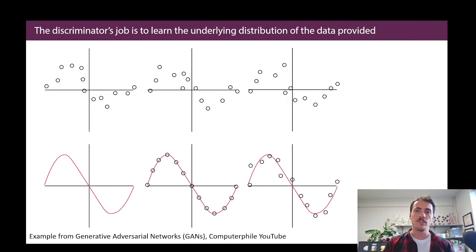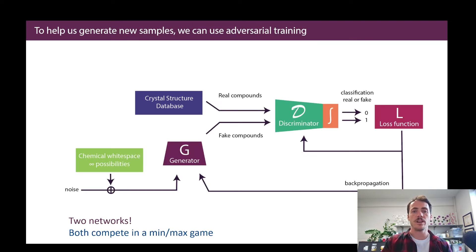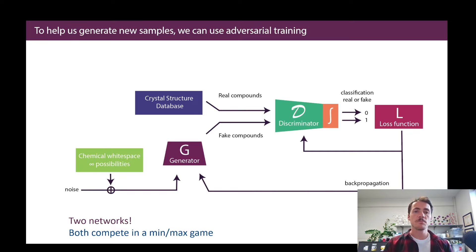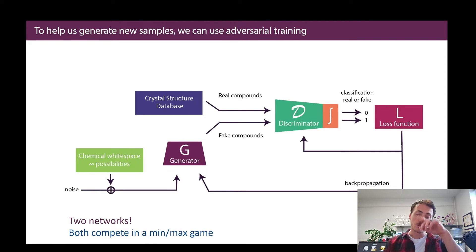Clever people like Ian Goodfellow and company came up with this idea: what if you have one model that learns the distribution and another that tries to generate things that match that distribution, and you pit these two things against one another? And thus was born the generative adversarial network. You still have a database of real materials passed to a discriminator whose job is to figure out real from fake, but instead of starting with a database of fake materials, you use another neural network — the generator — to generate fake samples.